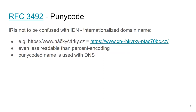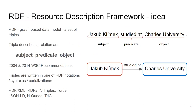These two encoding mechanisms can cause problems in some implementations, so it is good to know what those problems can be. That concludes the section on URIs, IRIs, URNs, and URLs. Let's get back to RDF.